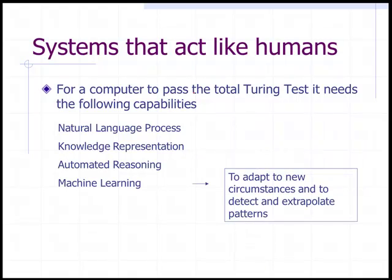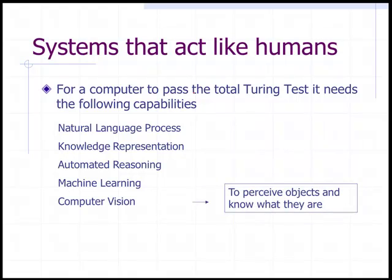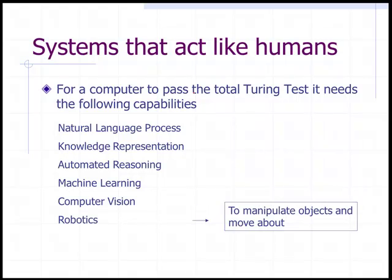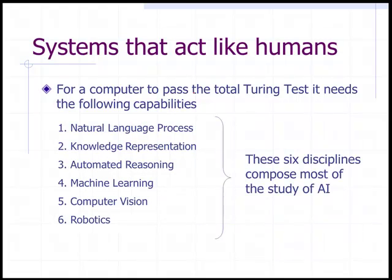Machine learning: it needs to adapt to new circumstances and detect and extrapolate patterns. Computer vision: to perceive objects and know what they are. Robotics: to manipulate objects and move about. These six disciplines comprise most of the study of artificial intelligence.